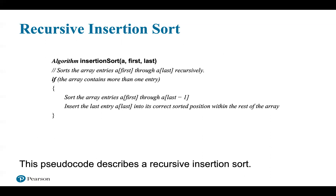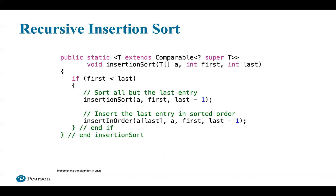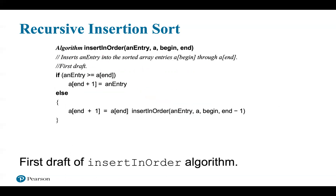You can also describe an insertion sort recursively. If you sort all but the last item in the array — a smaller problem — you can then insert the last item into the proper position within the rest of the array. The following pseudocode describes a recursive insertion sort, and here is the implementation in Java. A smaller problem is defined by sorting all but the last item, similar to what we described a couple of slides before.